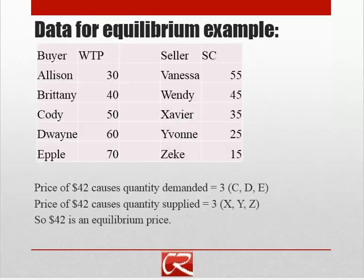A low price will tend to create a shortage because only a few sellers would be willing to profit, but lots of people would want to buy. And a high price is going to tend to create a surplus because only a few people are willing to pay a high price, but lots of sellers can make a profit at a high price.